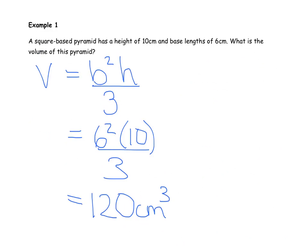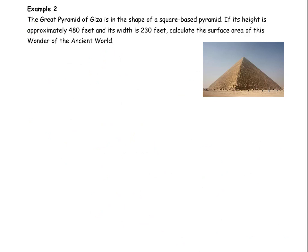Example 2. The Great Pyramid of Giza is in the shape of a square-based pyramid. If its height is approximately 480 feet and its width is 230 feet, calculate the surface area of this wonder of the ancient world.